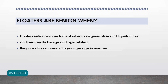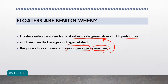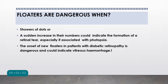So are floaters dangerous or are they benign? For most patients, floaters basically indicate age-related vitreous degeneration and liquefaction of the vitreous, so they are usually benign and not very dangerous. However, in myopes — nearsighted patients — vitreous degeneration can occur at an early age, and because of that, myopic patients are prone to developing floaters quite early in life. Otherwise, vitreous degeneration usually occurs in old age and is usually benign.